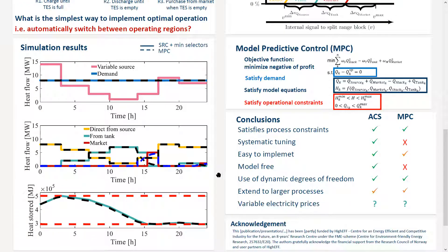When we are comparing the two control structures, we see that they behave similarly. In these simulations, we have a variable source and constant demand. We see that first, we are using heat directly from the source, and when this is not enough, we start discharging the tank until we have reached its minimum capacity, when we start buying from the market.